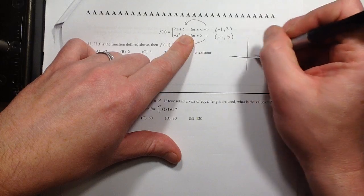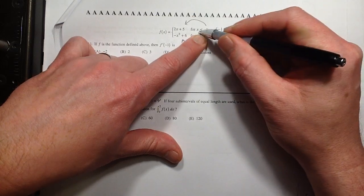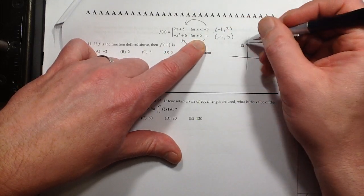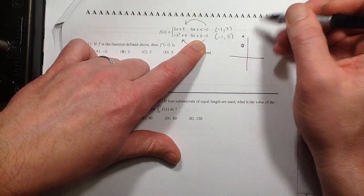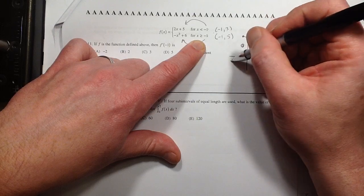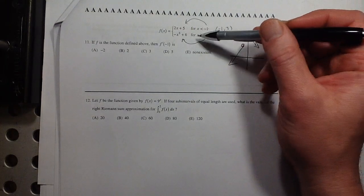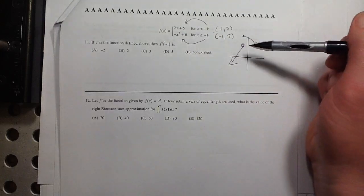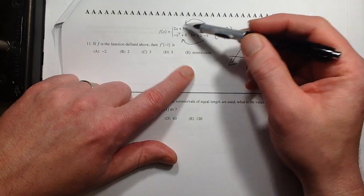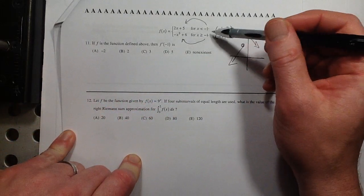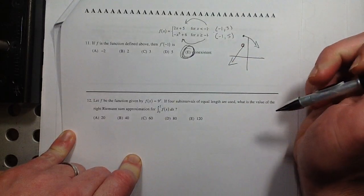And then it comes out of there at negative 1, 5. So this thing is not differentiable because it's not continuous. Now you could check the derivatives, and it's possible that the derivatives would match up at negative 1, but even if they did, the answer would still be non-existent because the two pieces do not link up.